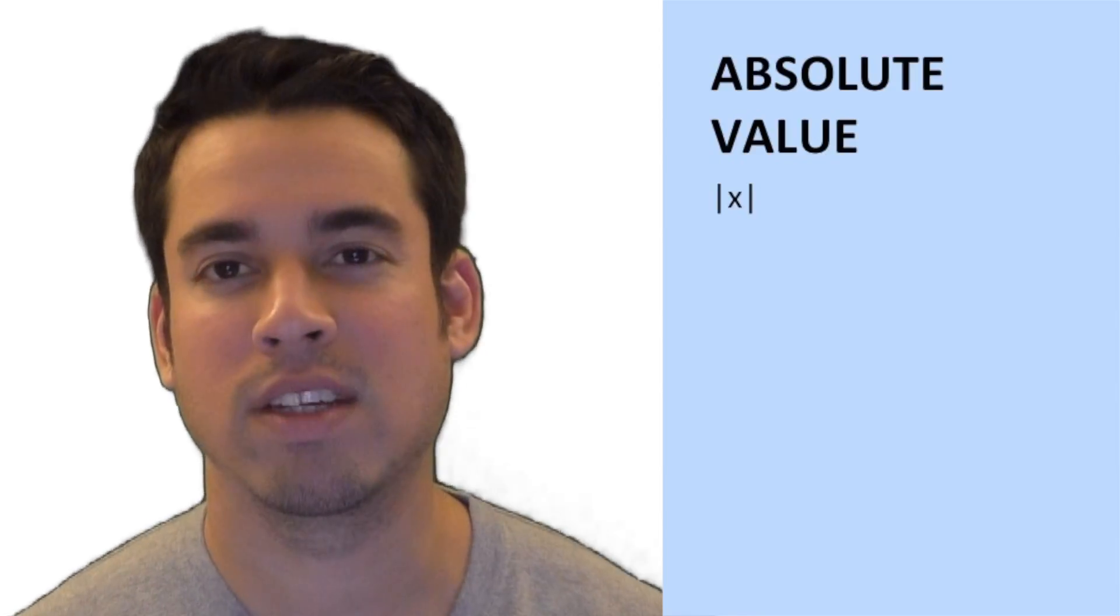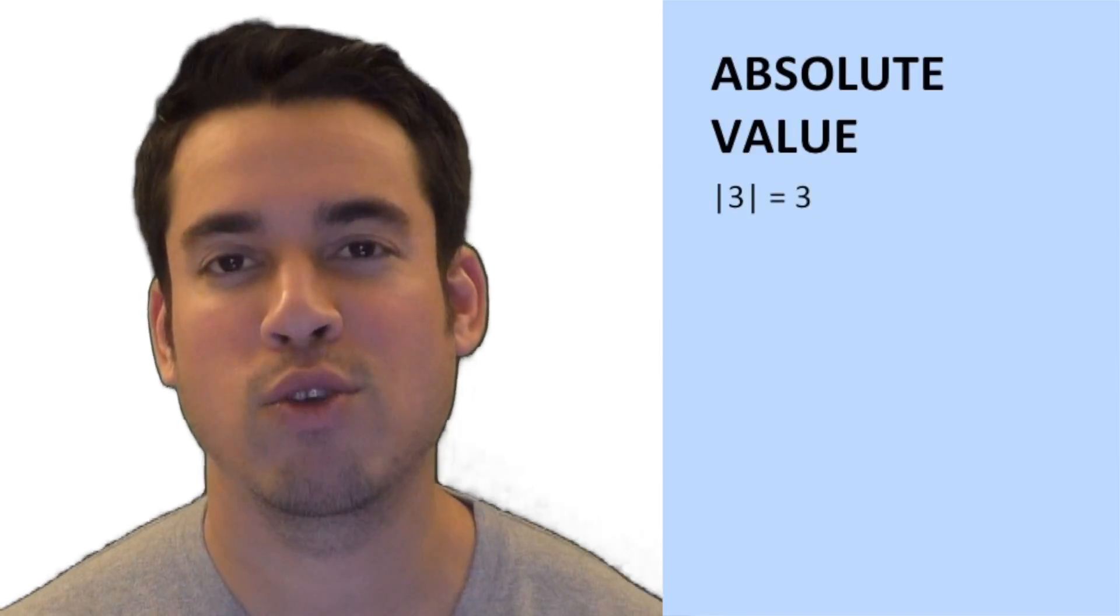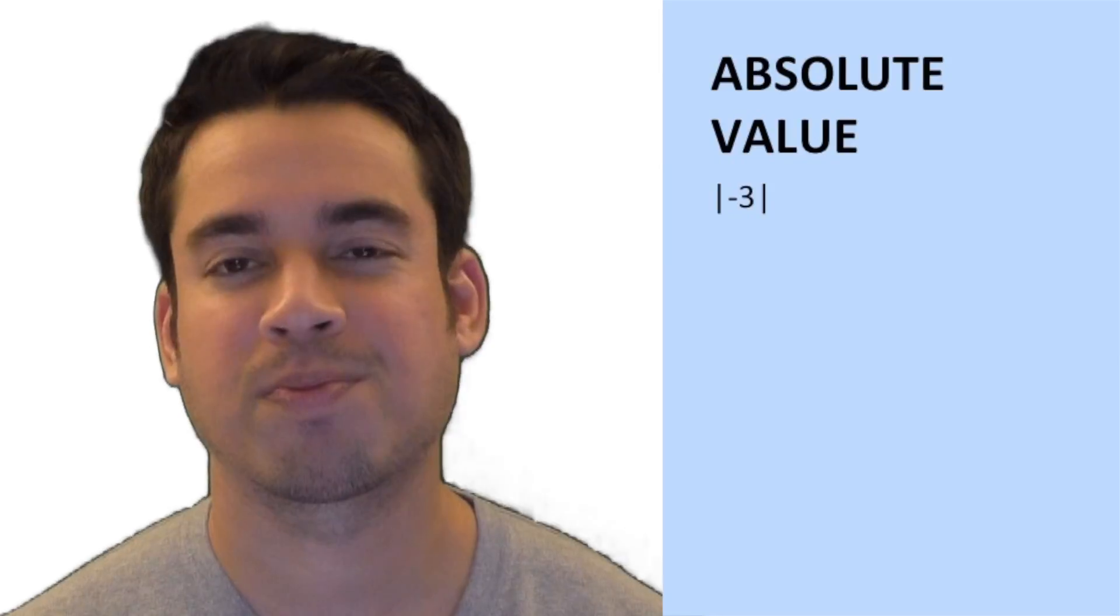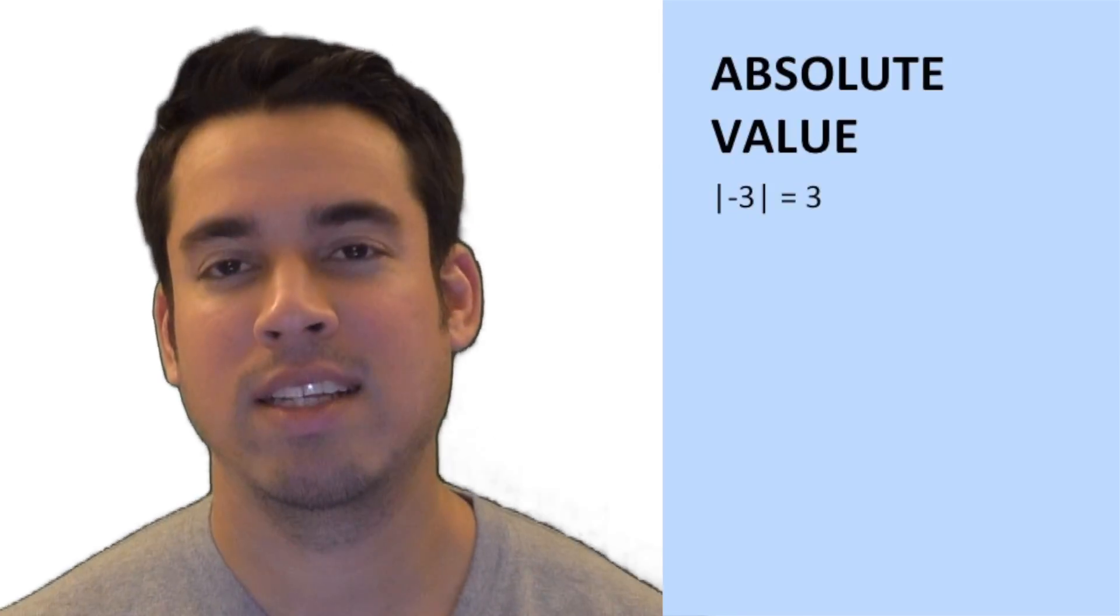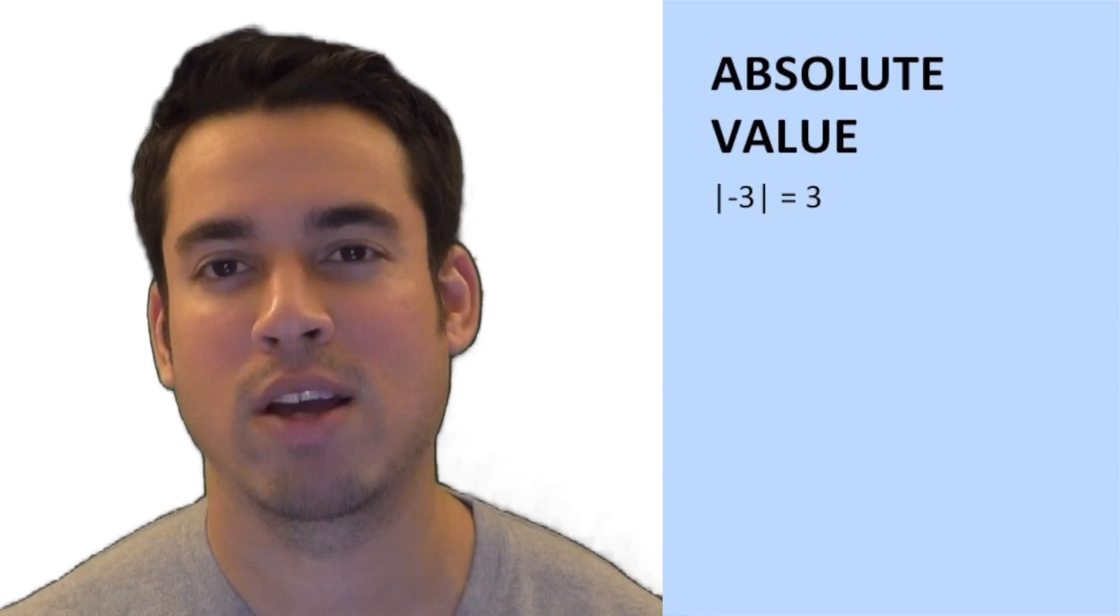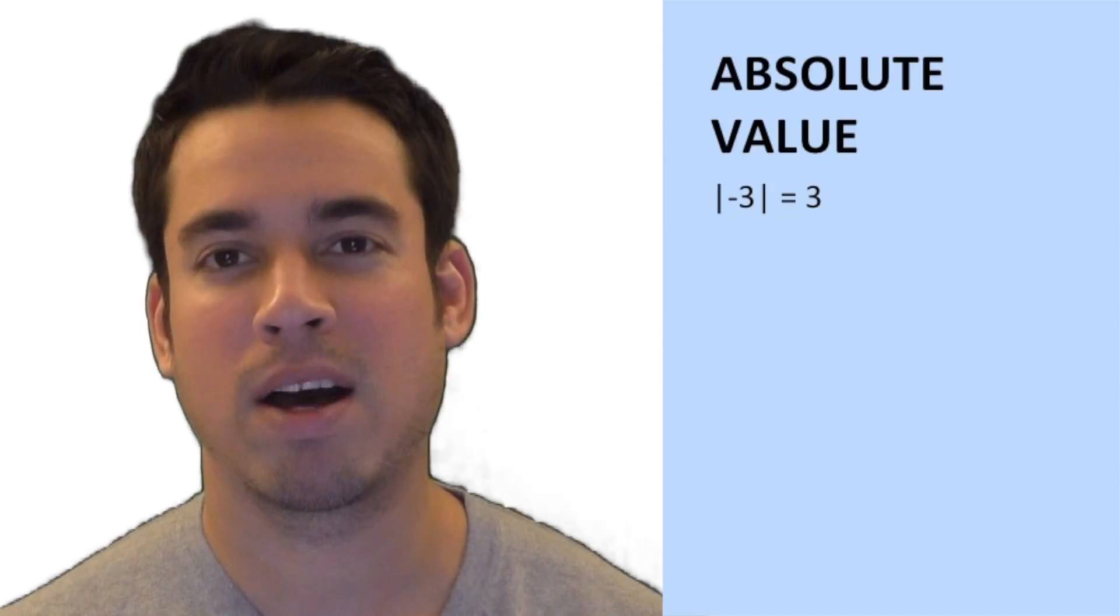Now, if it's already a positive integer, let's say you have the absolute value of three, it's simply three. It doesn't have any effect. But if it's absolute value of negative three, now it's going to turn that into a positive three. So the idea is when you put absolute values around something, you're almost ensuring that the value is going to be positive.